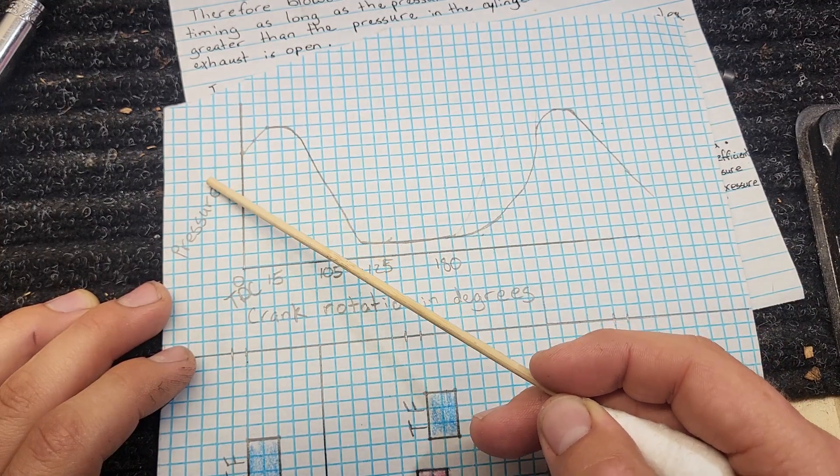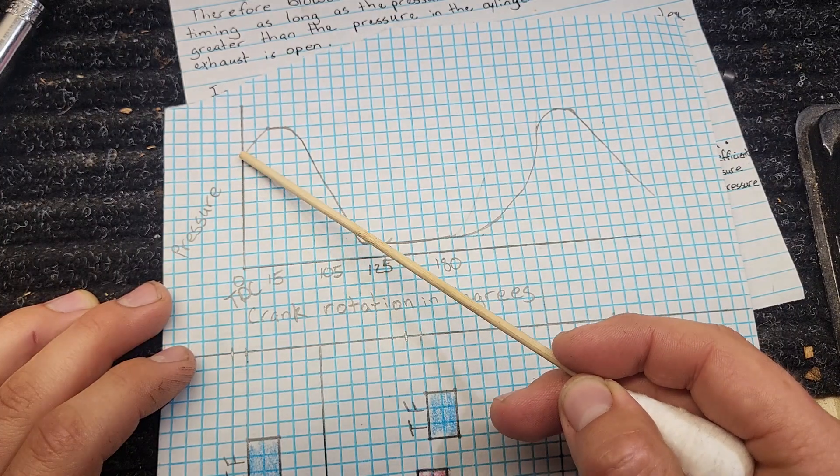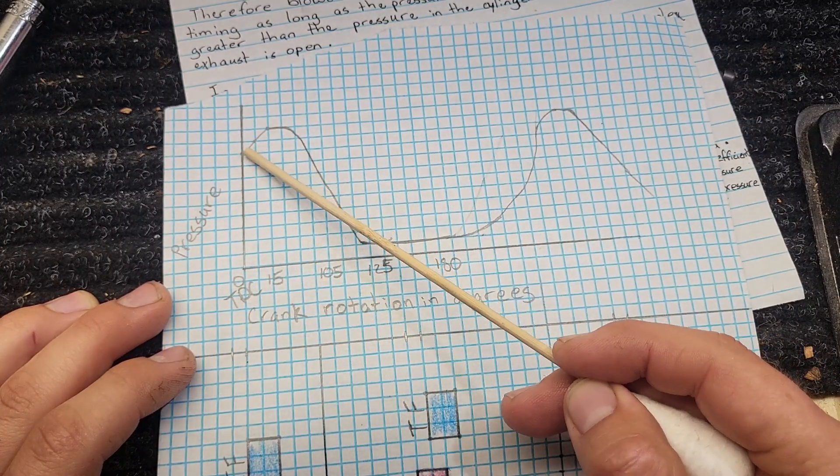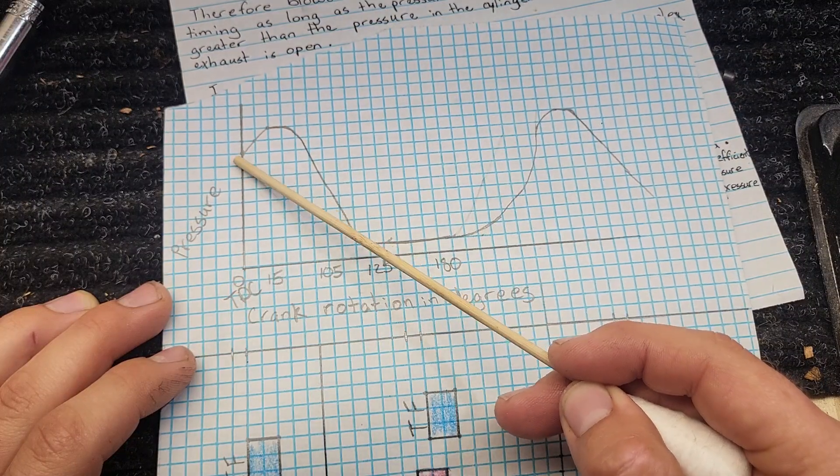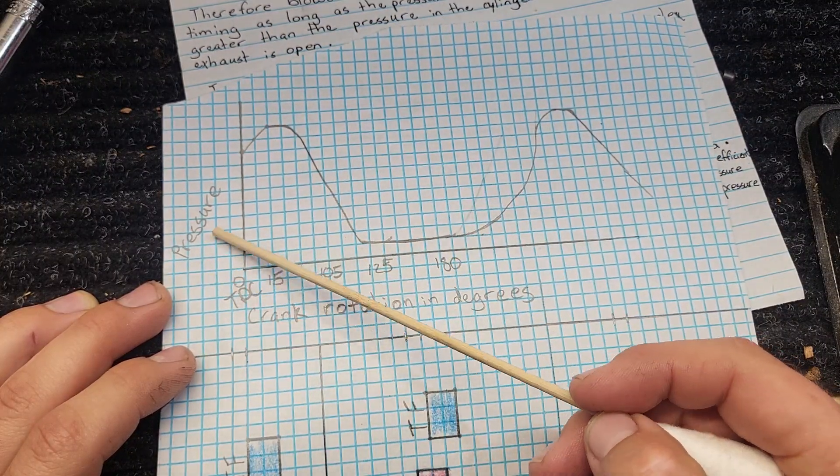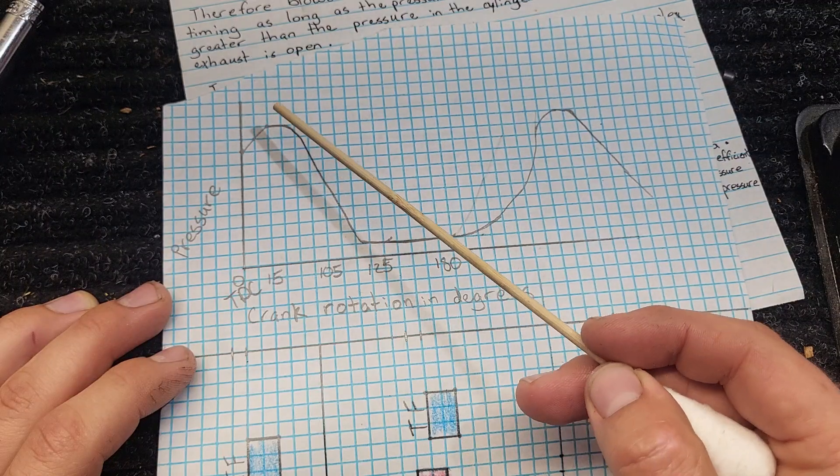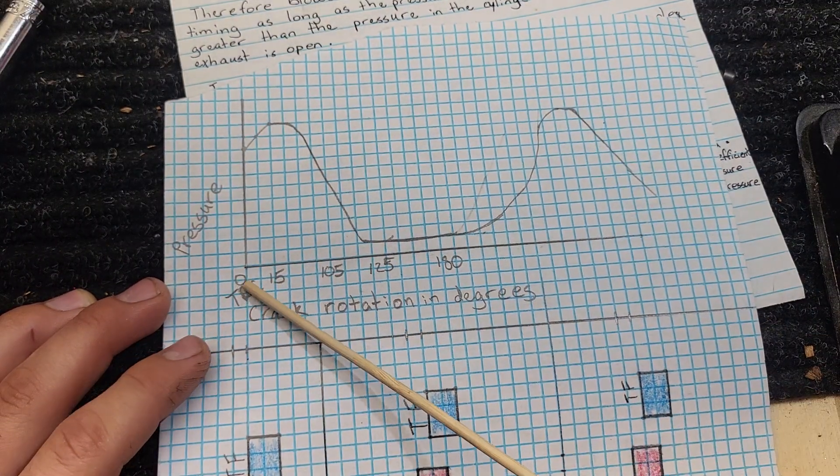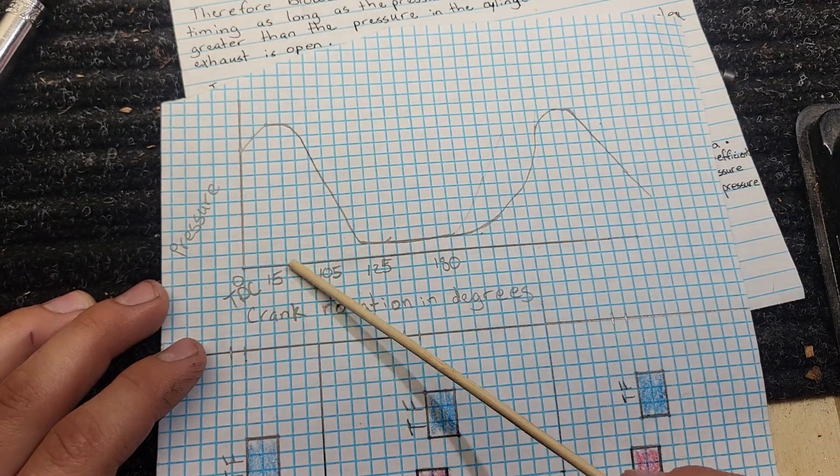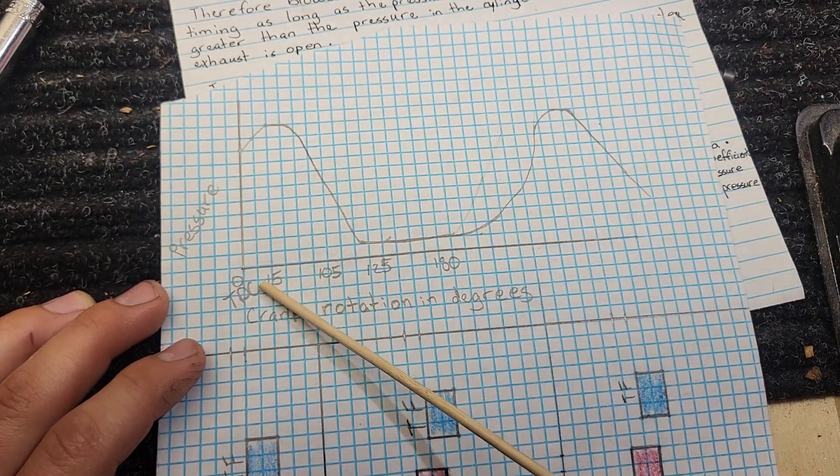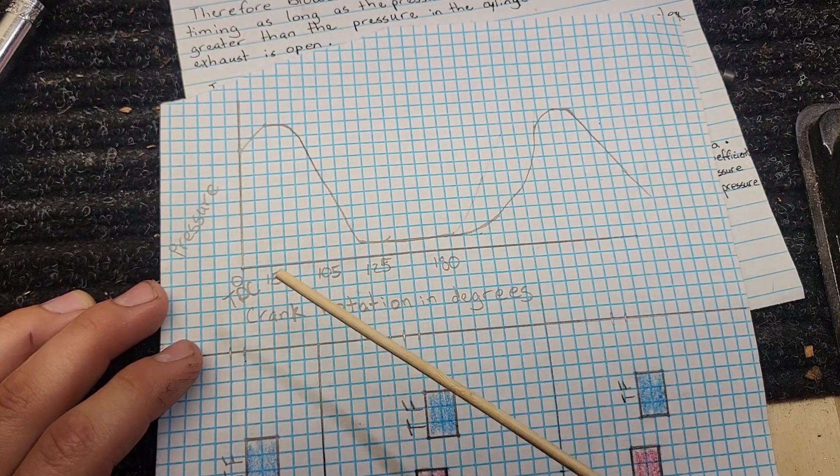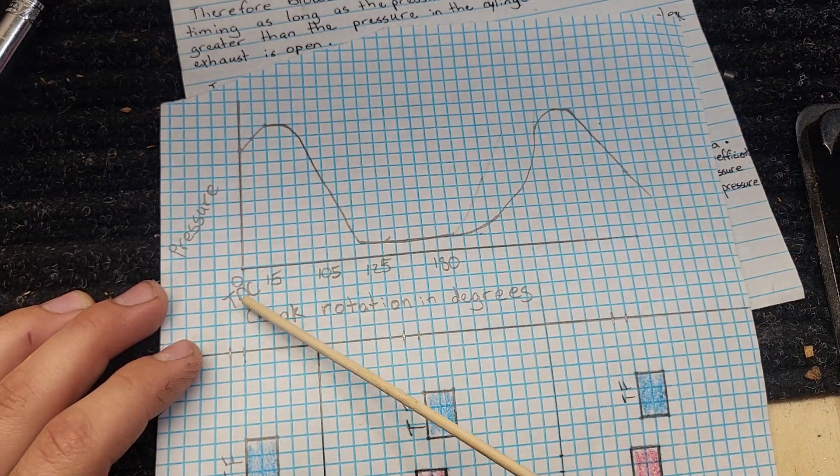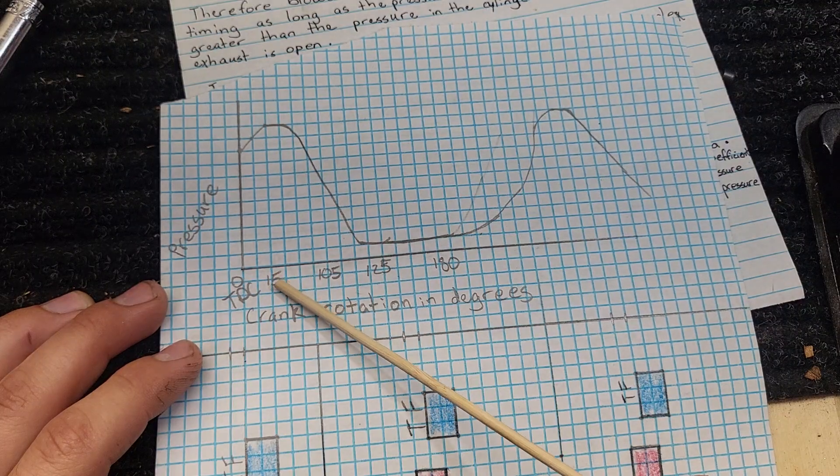So you've created a spark. Pressure is still climbing as you reach zero and pressure still continues to climb after you reach zero because of the fuel combusting. Your peak pressure occurs after zero top dead center. I think I've read around 15 degrees. It might be 10. It might be 20. Don't know. But I do know that it occurs after top dead center.